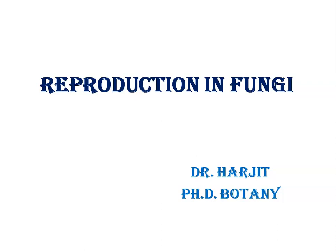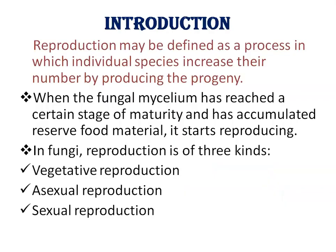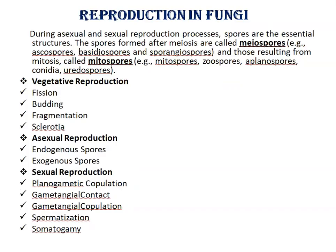Today we will discuss Reproduction in Fungi. Reproduction may be defined as a process in which individual species increase their number by producing progeny. When the fungal mycelium has reached a certain stage of maturity and accumulated reserved food material, it starts reproducing. In Fungi, reproduction is of 3 types: Vegetative Reproduction, Asexual Reproduction, and Sexual Reproduction. During Asexual and Sexual Reproduction, spores are the essential structures which are formed.